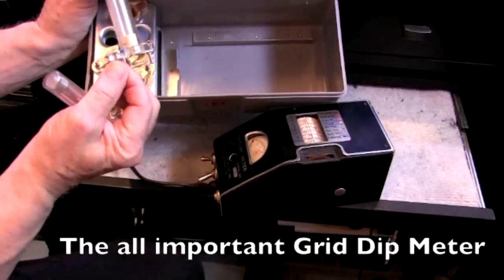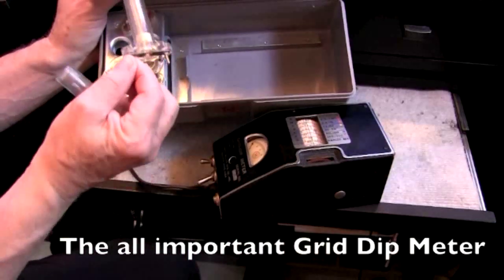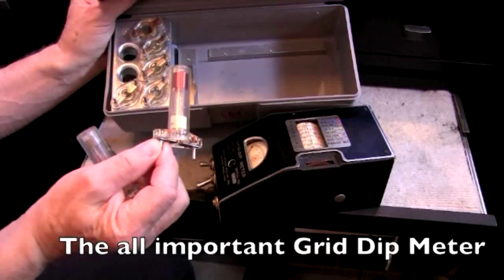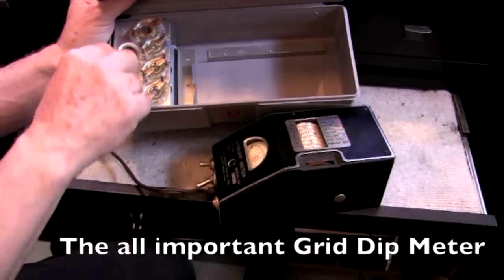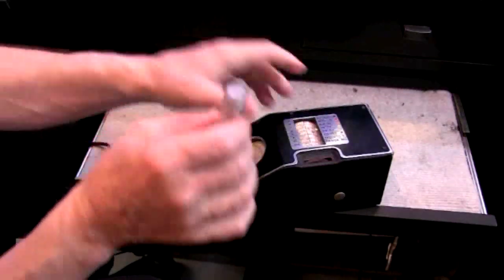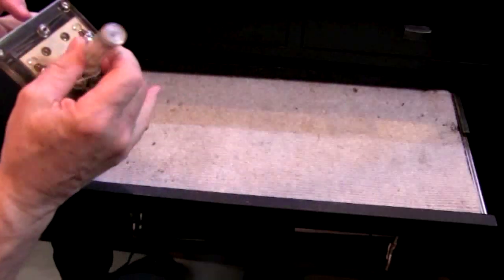And what that is, there's a tube in there. And when the resonant coil is passed through the frequency, you will see the grid of the tube reduced. Yes, it's called the grid dipper.